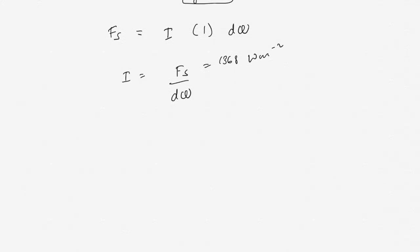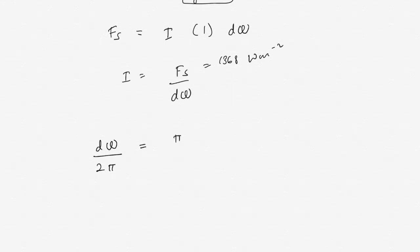dΩ is the fraction of the sky that is the Sun. We can estimate that using the ratio of the radius of the Sun to the distance the Sun is from the Earth. So dΩ over 2π — the entire hemispheric solid angle — equals the area of the Sun, πr², where RS is the radius of the Sun, over the entire area of the sky, which is the hemisphere at 4πd².